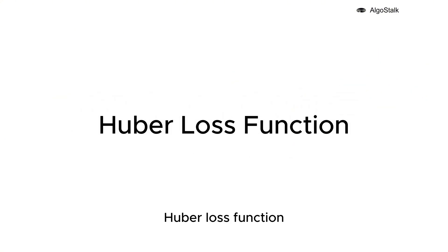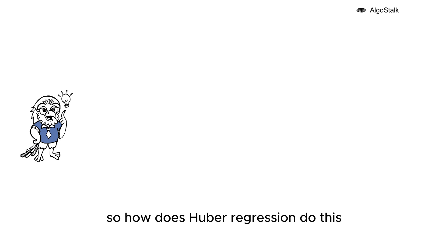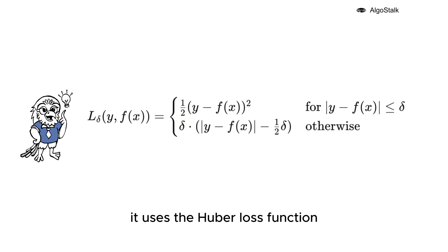Huber loss function: So how does Huber regression do this? It uses the Huber loss function, which cleverly combines the principles of mean squared error and mean absolute error. Here y is the true value, f(x) is the predicted value, and delta is a threshold that determines how sensitive the loss function is to outliers.